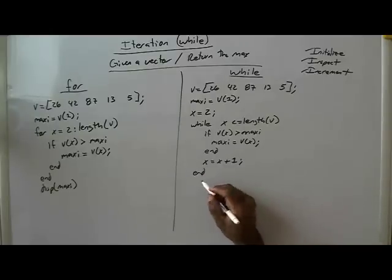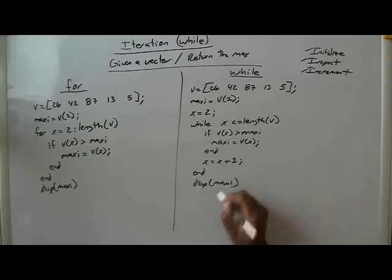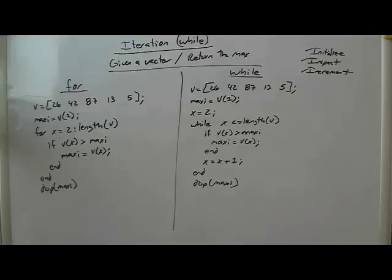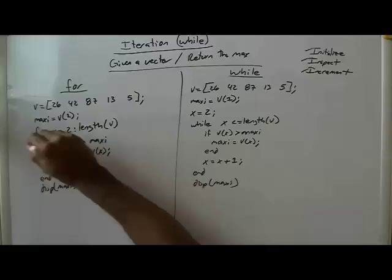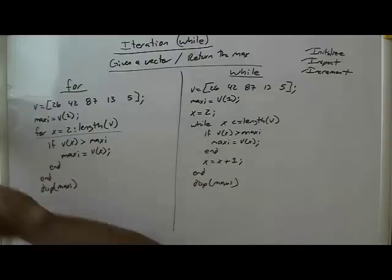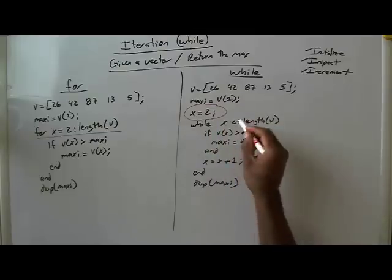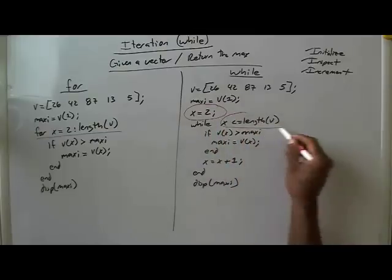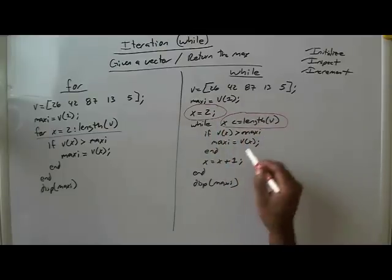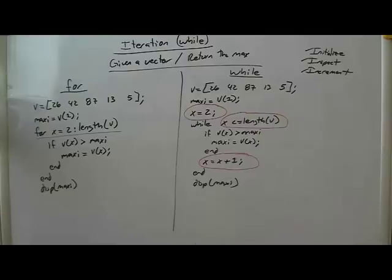And then we display maxi. So just like in the other examples, the for loop's indexing gets translated into initializing, inspection, and incrementing in the while loop.